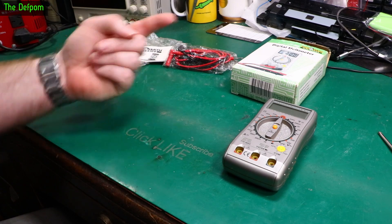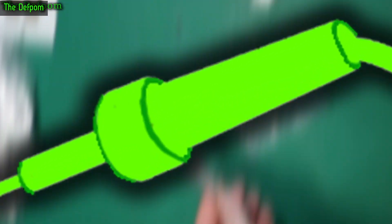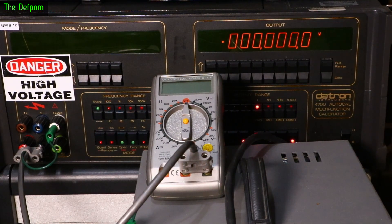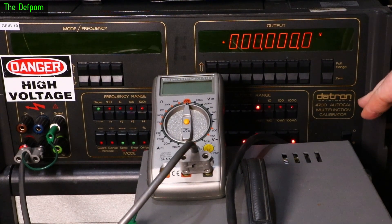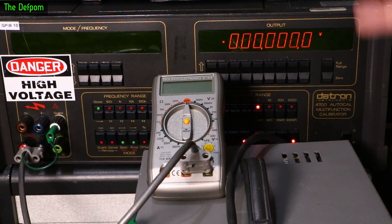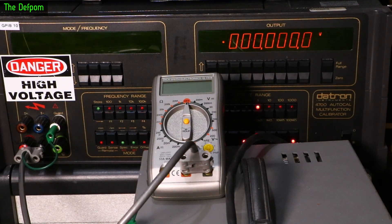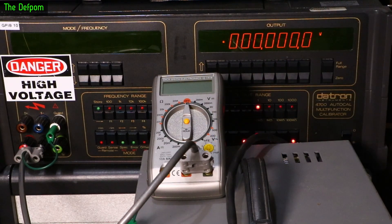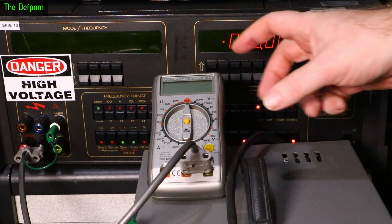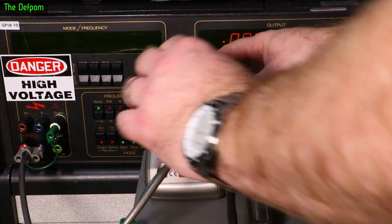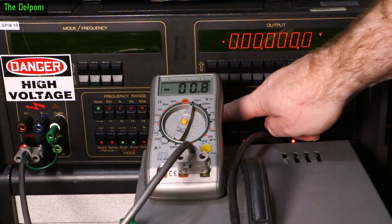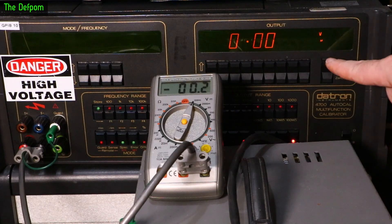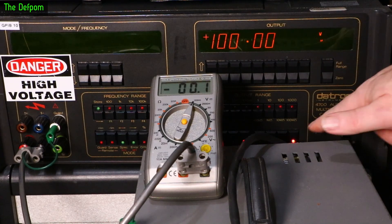All right, let's go to the calibrator. So here we are at the calibrator. This is my DATRON 4700. This thing does DC volts, AC volts, resistance, and currents up to 1.9 amps. So this thing can basically test everything this meter can do apart from transistor testing. We'll start this large range, which is 200 millivolts. Turn it on.